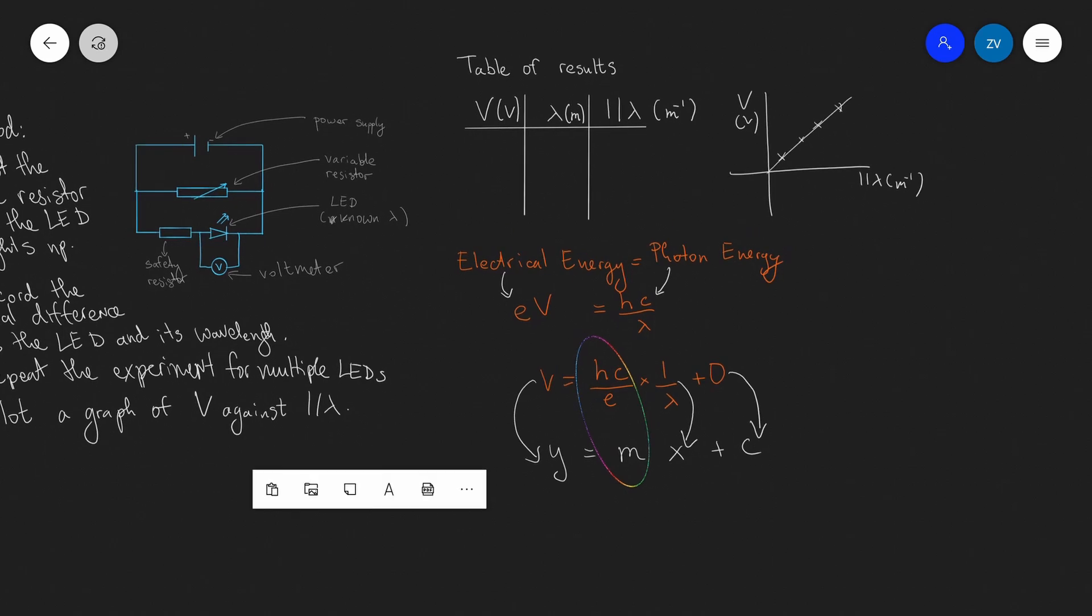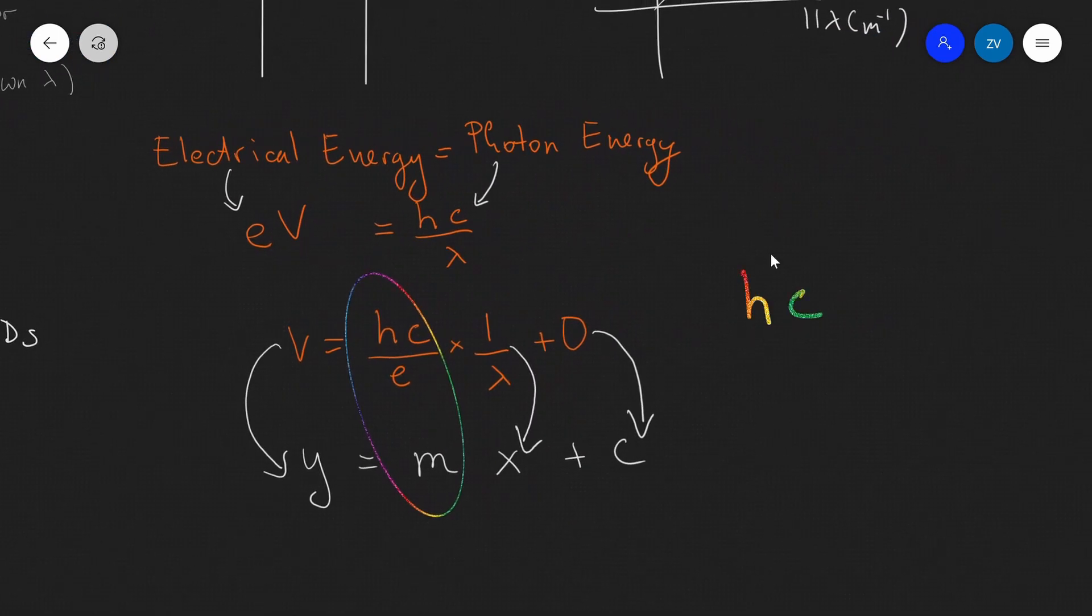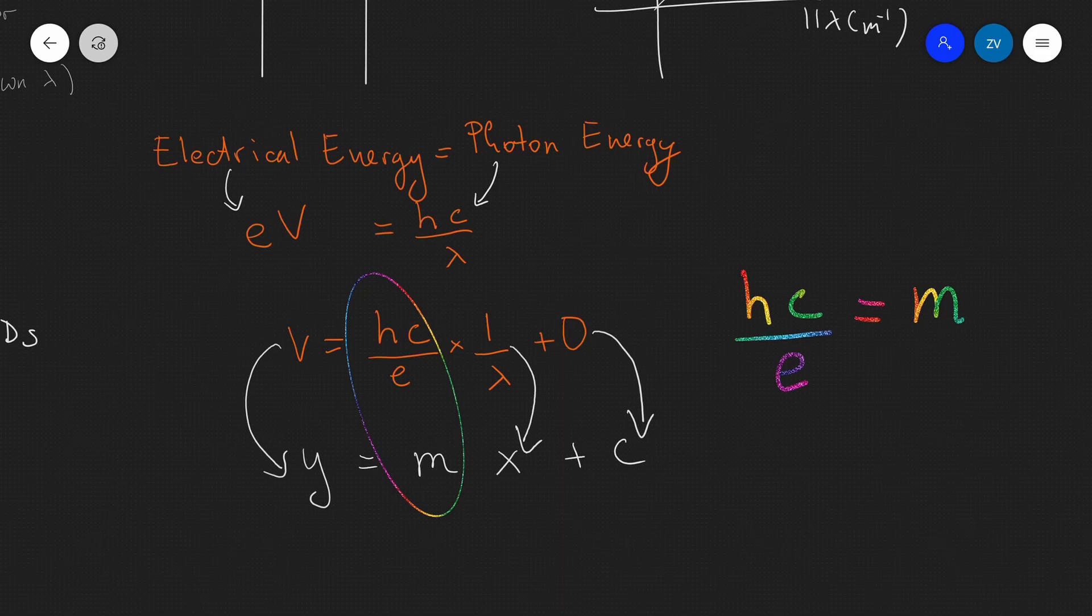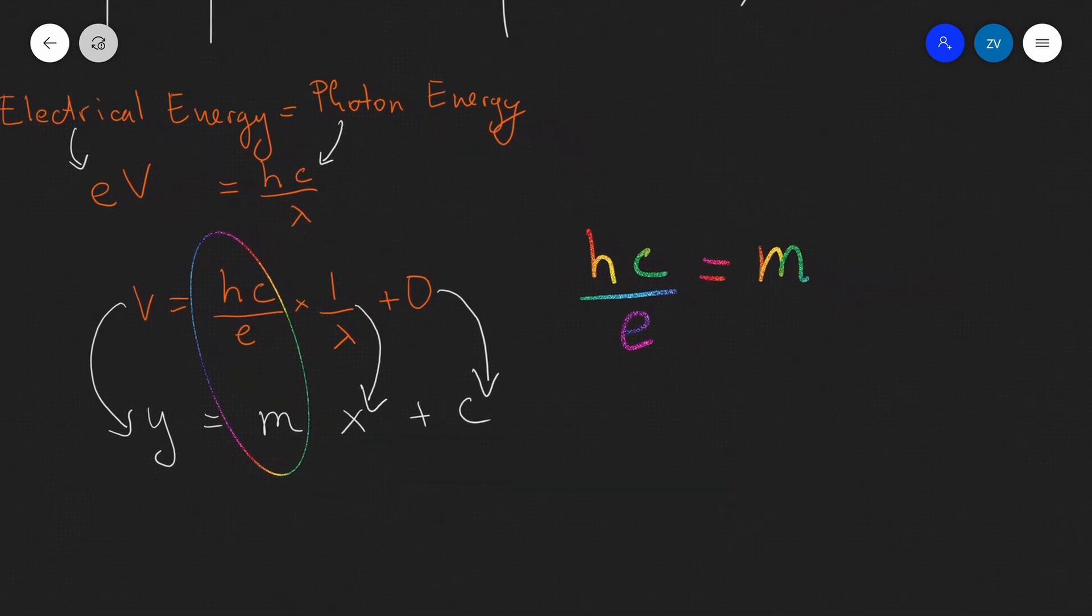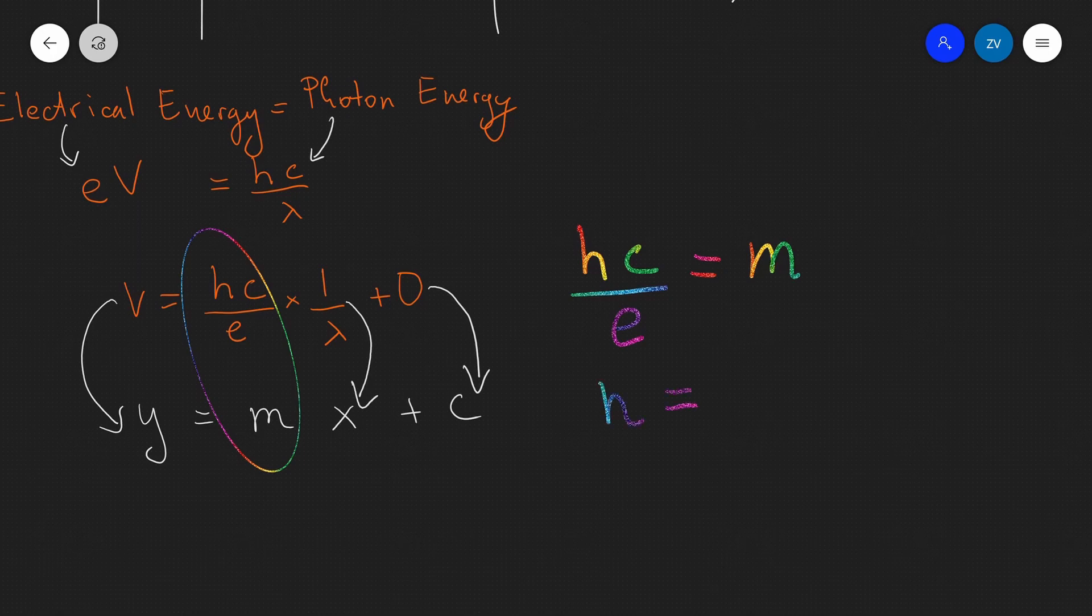So, what I'm going to do is just write that down over here on the side that hc over e is equal to our gradient m. And I'm using my rainbow pen because this is really, really important. We can directly rearrange for Planck's constant in this case because this is going to equal the gradient of our graph times the charge of an electron divided by the speed of light.